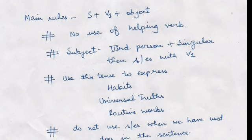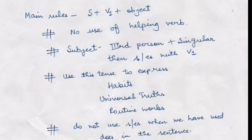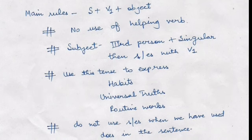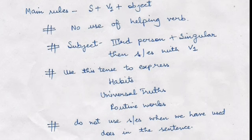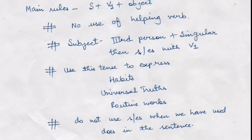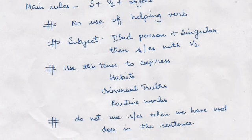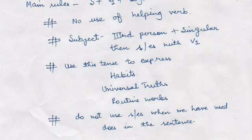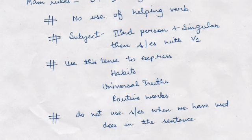Let's do a recapitulation. The main rule is: subject plus V1 (first form of verb) plus object — no use of helping verb. If the subject is third person singular, add S or ES with V1. Use this tense to express habits, universal truth, and routine. Do not use S or ES when 'does' is already used in the sentence. That's all — the tense is very simple, just revise all the rules and become perfect. Thank you.